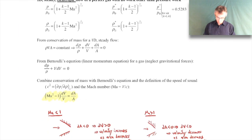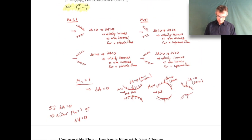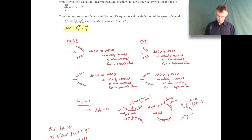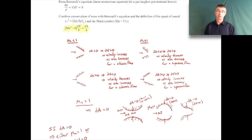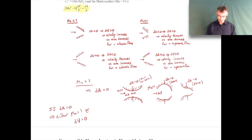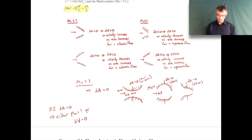To summarize so far: the behavior changes dramatically between subsonic and supersonic flows. For subsonic flow: decreasing area increases velocity and Mach number; increasing area decreases them. For supersonic flow: decreasing area decreases Mach number and velocity; increasing area increases them - just the opposite. And if there's a sonic condition (M = 1) anywhere in the flow, it must occur at a minimum area (where dA = 0). Having a minimum area doesn't guarantee M = 1; you could just have dV = 0.